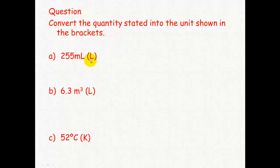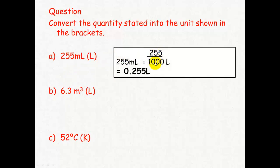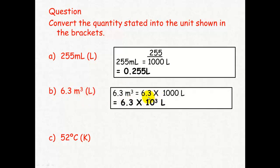255 milliliters to liters—we just divide by 1000 and get 0.255 liters. 6.3 meters cubed—remember, 1 meter cubed equals 1000 liters—so we multiply 6.3 by 1000 to get 6300, or 6.3 times 10 to the third liters. And lastly, 52 degrees Celsius to Kelvin—we add 273 to get 325 Kelvin.